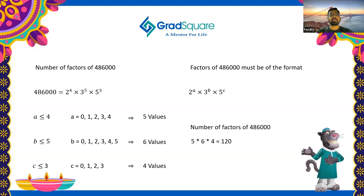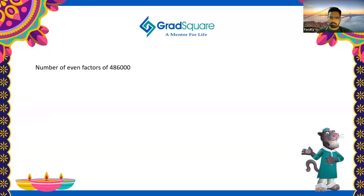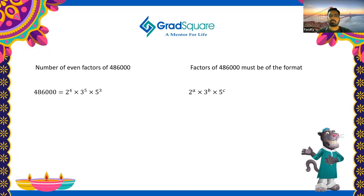Now let's complicate the question. Instead of simply finding the total number of factors, let's find the number of even factors of 486,000. The factor is still of the format 2^a × 3^b × 5^c, but it must be an even number. For the factor to be even, it must contain at least one factor of 2, meaning a must not be zero.